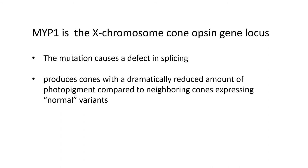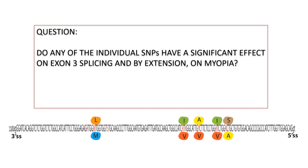So what I've told you so far is that MYP1 is the X chromosome cone opsin gene locus. The mutation causes a defect in splicing of the cone photopigment genes and it produces cones with a dramatically reduced amount of photopigment compared to neighboring cones expressing normal variants. So our next question was: do any of the individual single nucleotide polymorphisms have a significant effect on exon 3 splicing and then by extension on the common juvenile onset form of myopia?